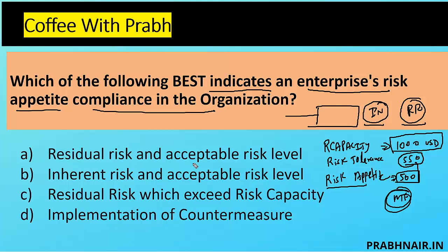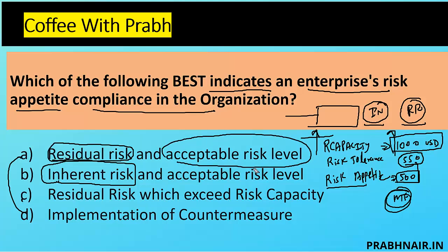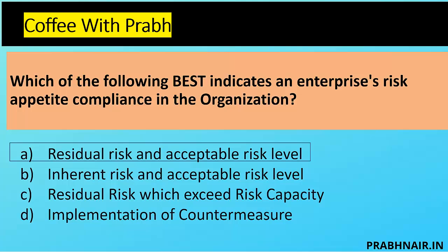Option A says residual risk and acceptable risk level, which is part of our appetite. Option B — inherent risk and acceptable risk level — is removed because inherent risk is untreated risk. Option C — residual risk exceeding risk capacity — is also removed; any risk exceeding capacity means we avoid that opportunity. Option D is part of A. So the best indicator of enterprise risk appetite is residual risk within the acceptable level. The answer is A.